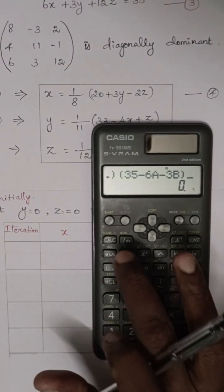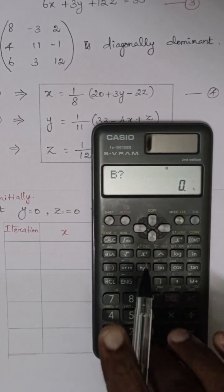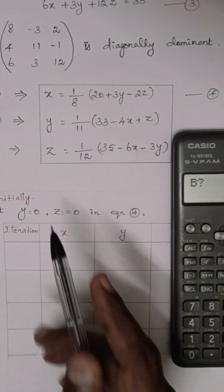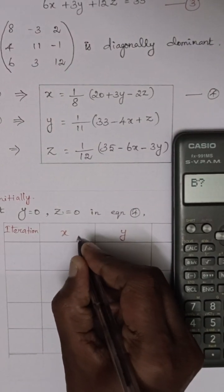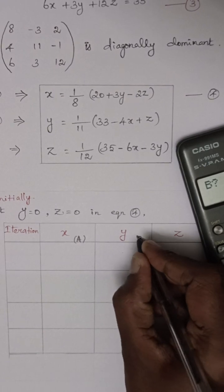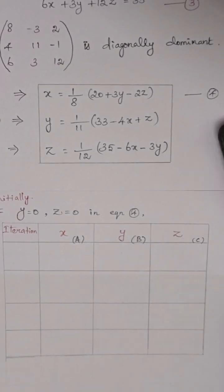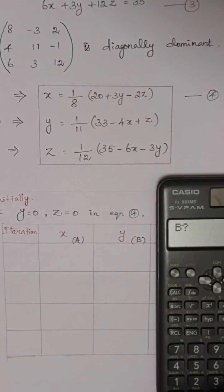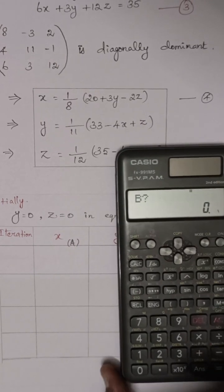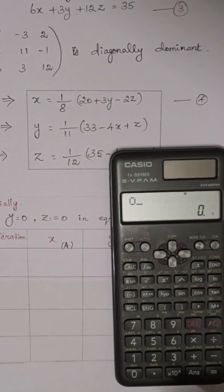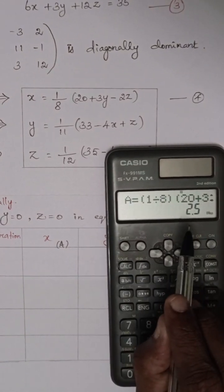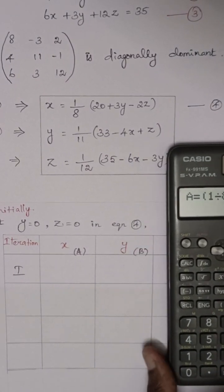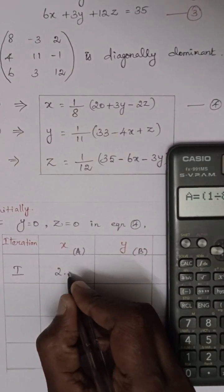What is the initial value? Initial value y equals 0 and z equals 0. So first, we have to write a for x, b for y, and c for z. b value initial value is 0, and c value also 0. What is the a value? First value is 2.5. This is first iteration.